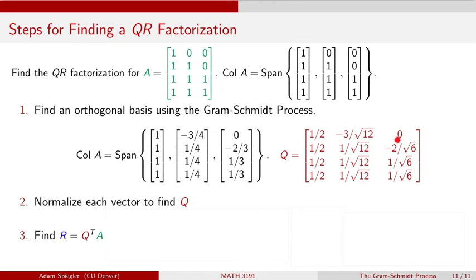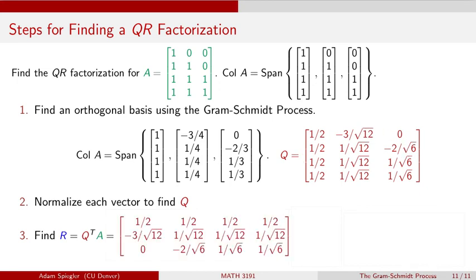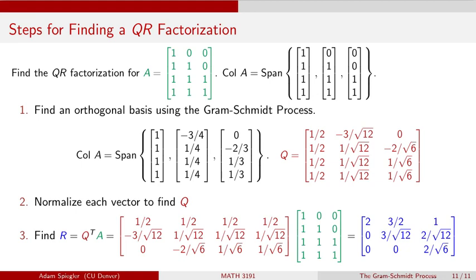That's really the only more complicated work. Once I've got matrix Q, I find matrix R by taking the transpose of Q — interchanging rows and columns — and multiplying it by the matrix A that we started with. Calculating that product, we wind up with a 3 by 3 upper triangular matrix where the first row is (2, 3/2, 1), the second row is (0, 3/√12, 2/√12), and the third row is (0, 0, 2/√6).